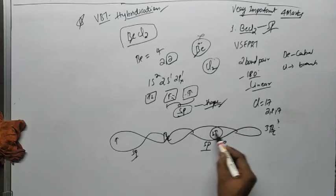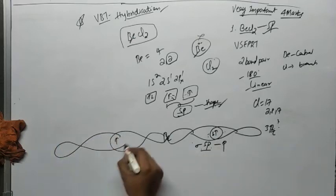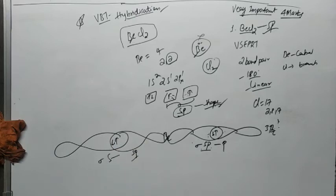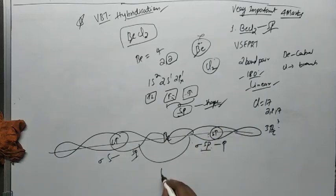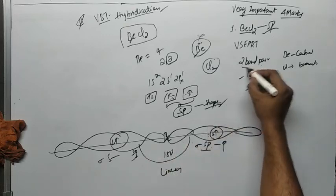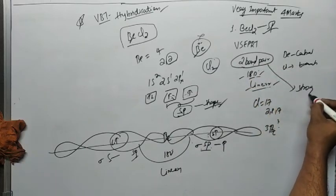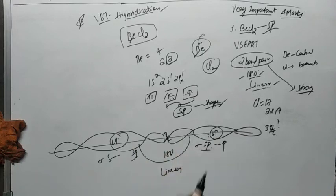In VBT theory, a bond is formed between two orbitals by end-to-end overlap, giving a sigma bond. The first sp hybrid orbital of beryllium overlaps with the 3pz orbital of chlorine to form a sigma bond. Similarly, the second sp hybrid orbital forms a sigma bond with the second chlorine. This gives two sigma bonds, a bond angle of 180 degrees, linear shape, and both bonds are strong.